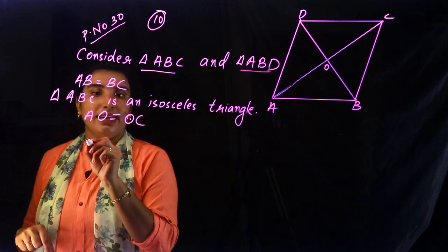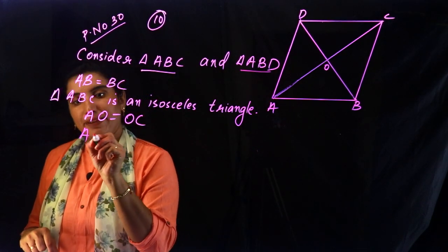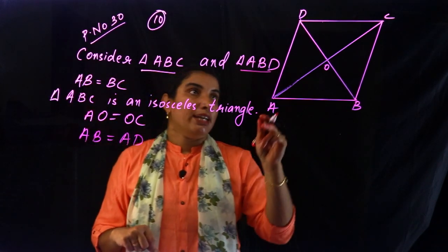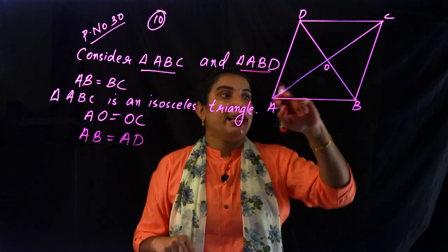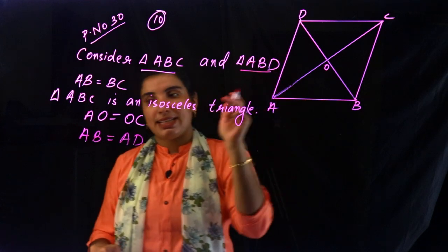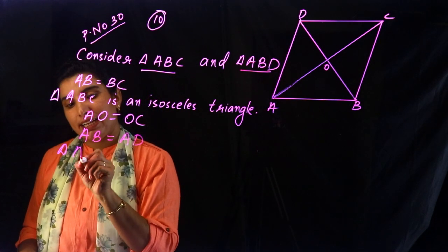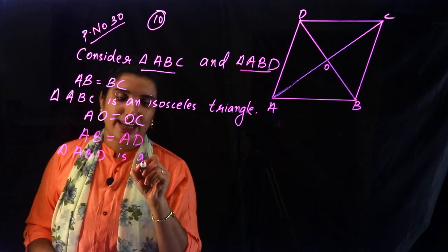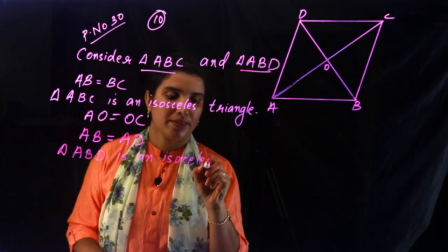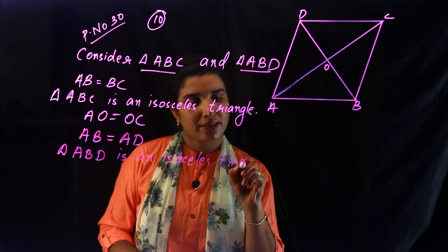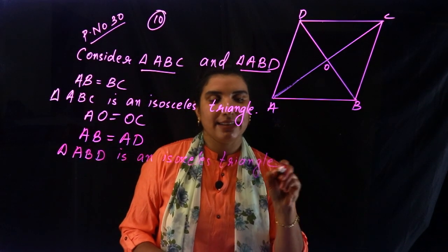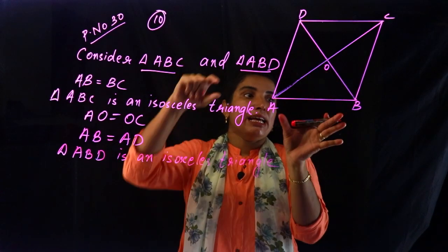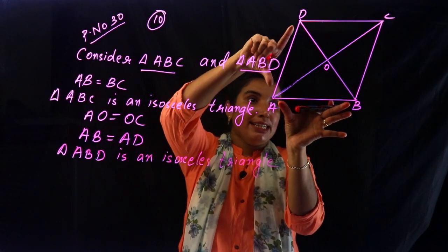We say AB is equal to AD. Therefore triangle ABD is an isosceles triangle. ABD is an isosceles triangle with AB and AD as equal sides.